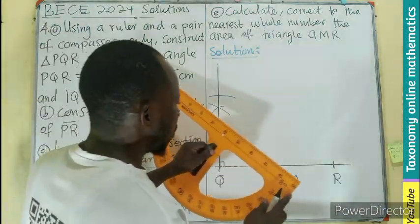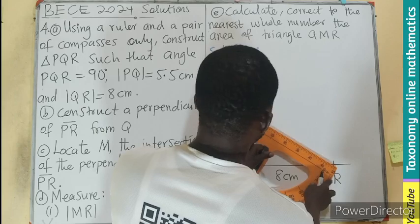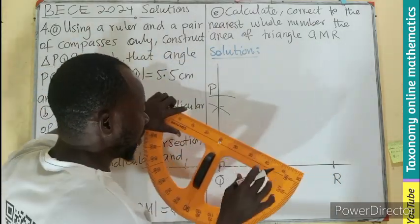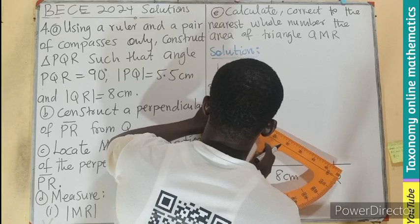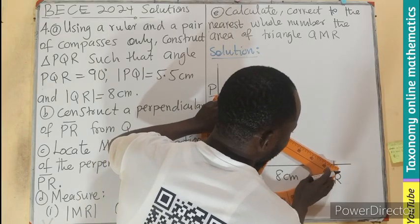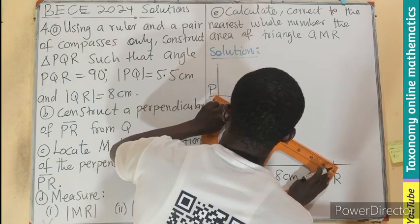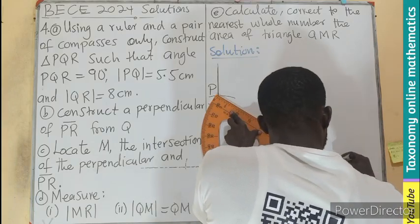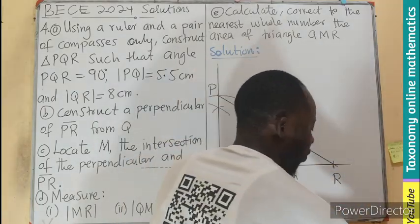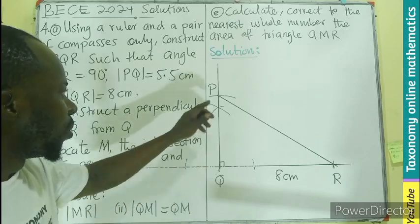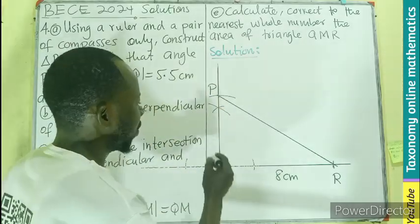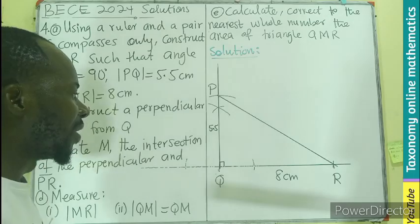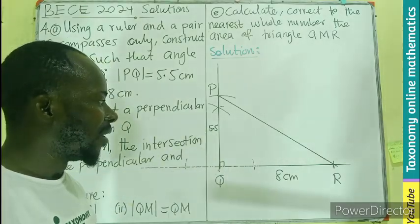So I'm going to join the P. This is where the P is going to be. Join the P and that of R together to form the required triangle. So you can see this is our triangle, P, Q, R, with here being 5.5 centimeter. The angle is here.